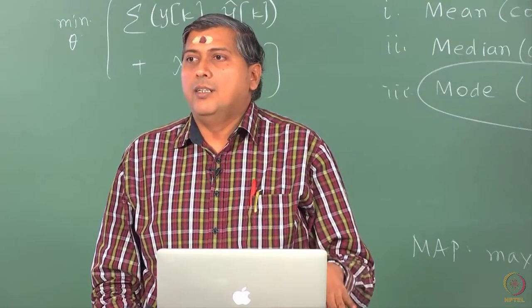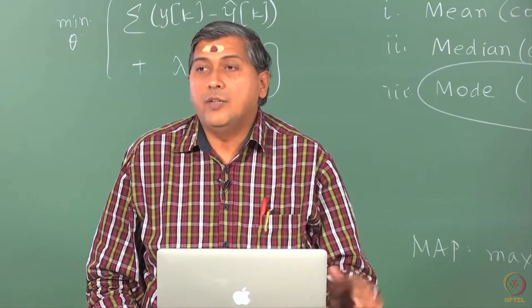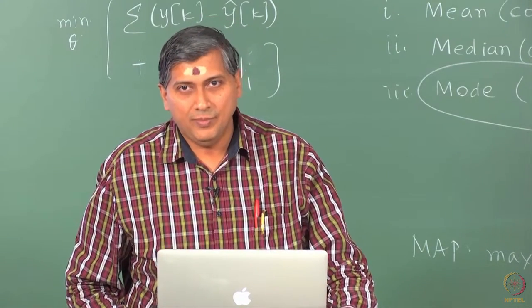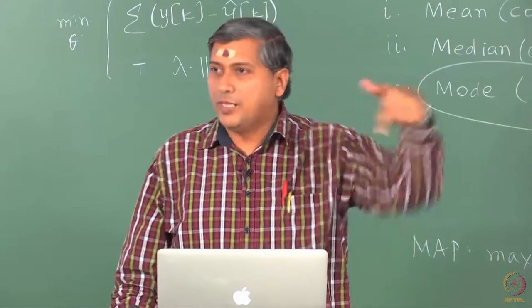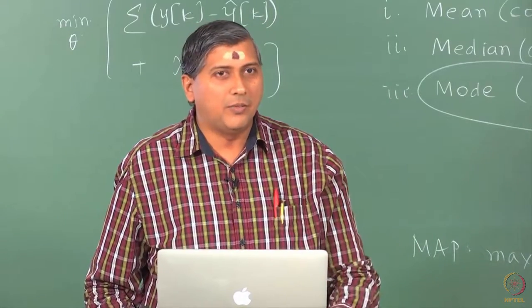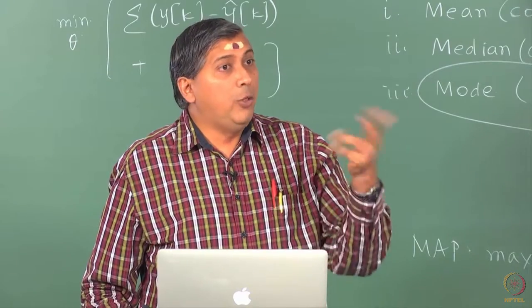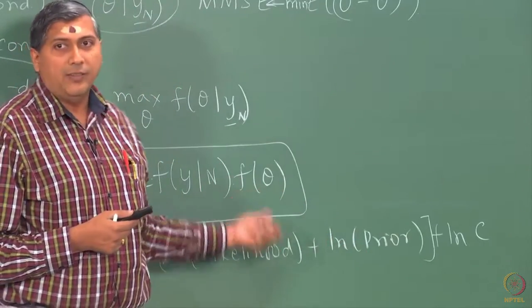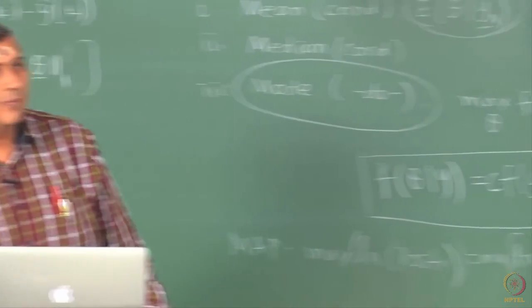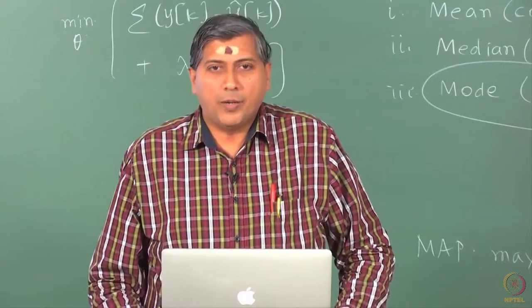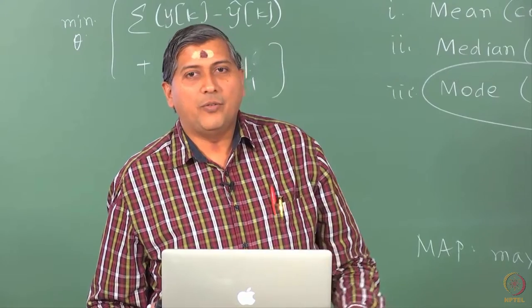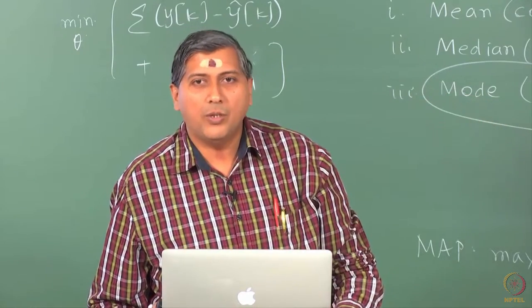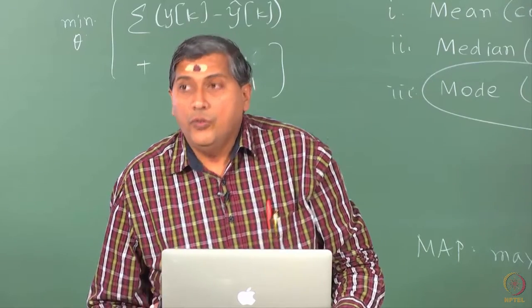It turns out that it becomes MLE with Tikhonov regularization if you use a Gaussian prior, because if you use a Gaussian prior for theta, logarithm of F of theta would become the square 2 norm, of course, with the mean shifted theta, but that is okay. And you can show that if you choose a Laplacian prior, F of theta here to be Laplacian, what is the difference between Laplacian PDF and Gaussian PDF? Yeah, so instead of square you have mod. So, Laplacian prior is no different from Gaussian, but except that instead of a square you have e to the minus modulus.